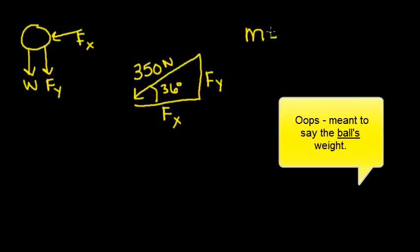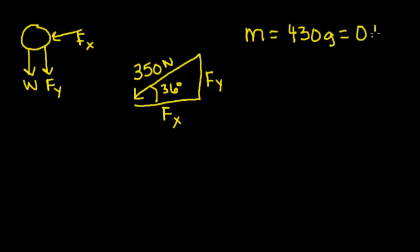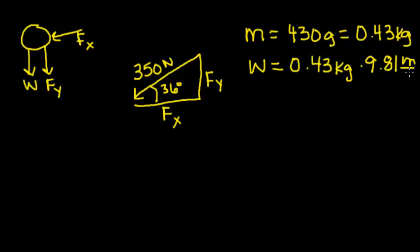We also want to solve for the ball's weight. Its mass is 430 grams, which equals 0.43 kilograms. So its weight is going to equal 0.43 kilograms times 9.81 meters per second squared as the acceleration of gravity. So the weight, we're going to use 4.2 newtons.